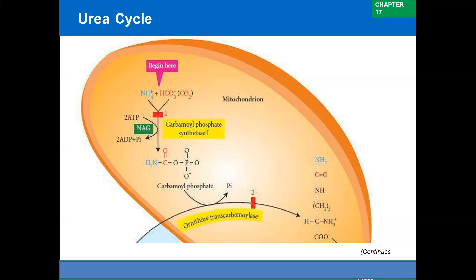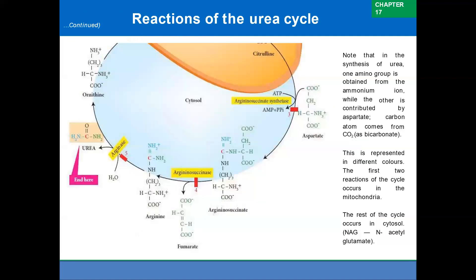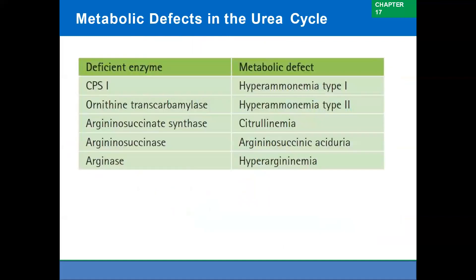Metabolic disorders related to the urea cycle: any defect in the urea cycle leads to elevated ammonium ion levels in the blood, called hyperammonemia. Genetic defects in urea cycle enzymes in newborns result in clinical symptoms like vomiting, lethargy, intermittent ataxia, and irritability. If left untreated, it may lead to irreversible brain damage resulting in mental retardation and coma.